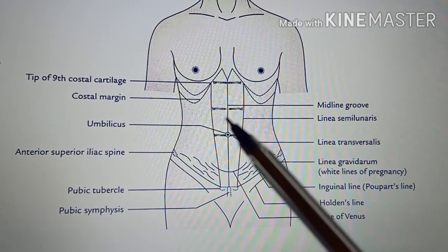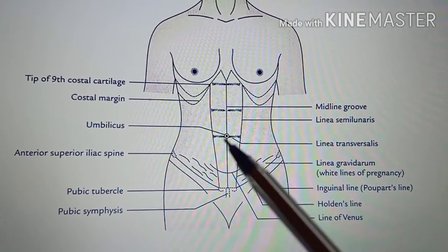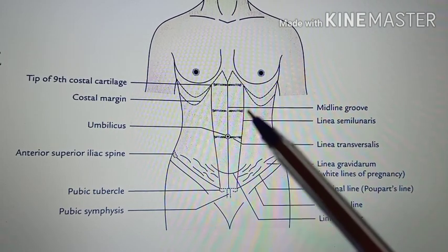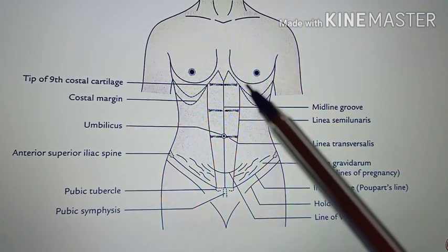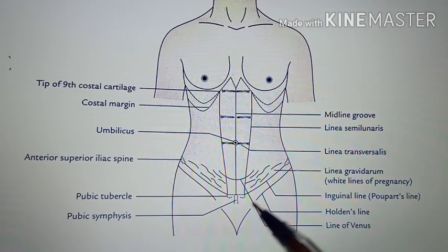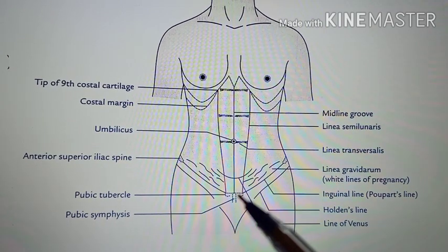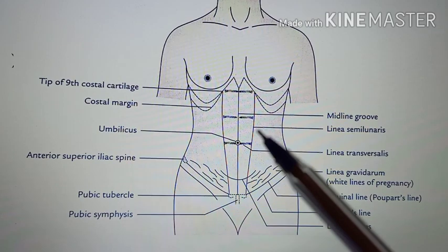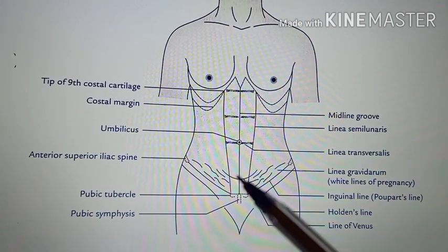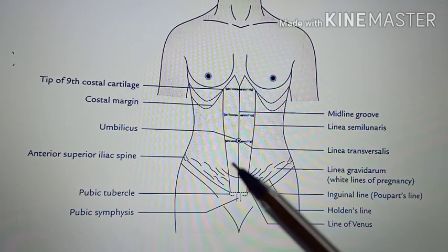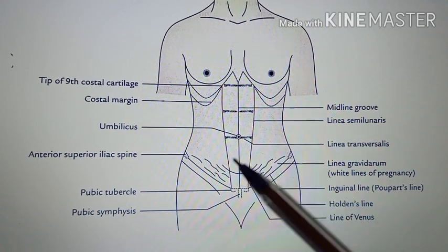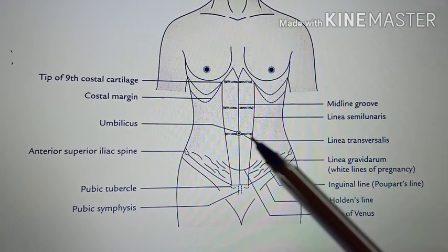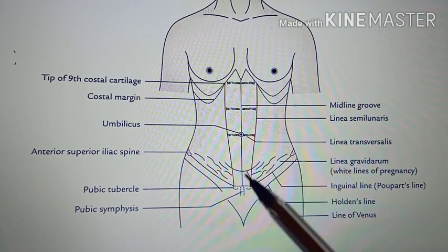What you are seeing here is the linea semilunaris — the curved furrow extending from the tip of the 9th costal cartilage up to the pubic tubercle. It corresponds to the lateral margin of the rectus abdominis muscle. On both sides you will have the rectus abdominis muscle, and lateral to it is the linea semilunaris.